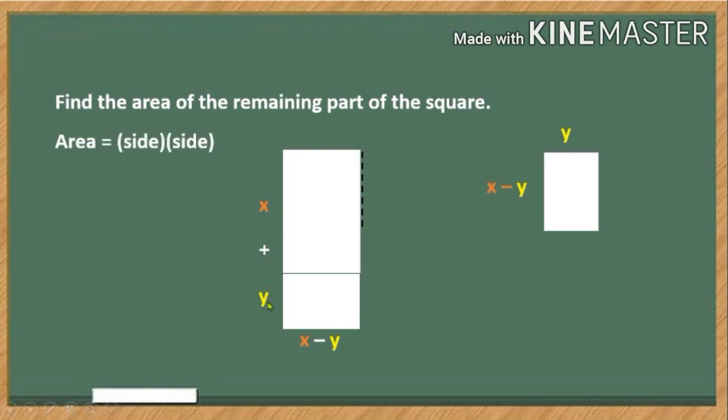So the area again is equal to the product of the two sides of a rectangular figure, and that is equal to x plus y multiplied by the difference of x and y, or x minus y.